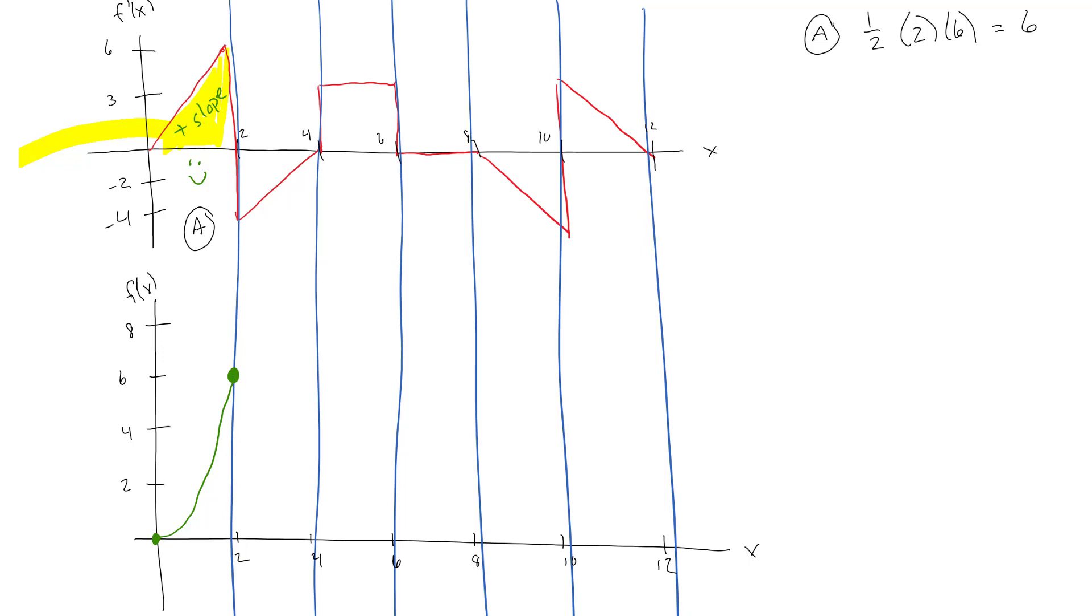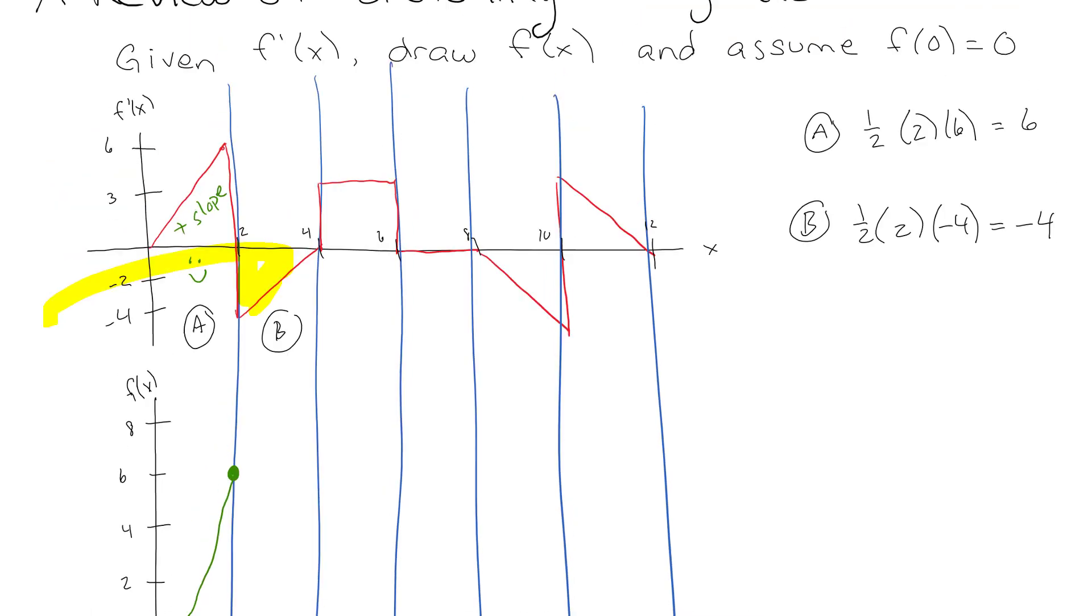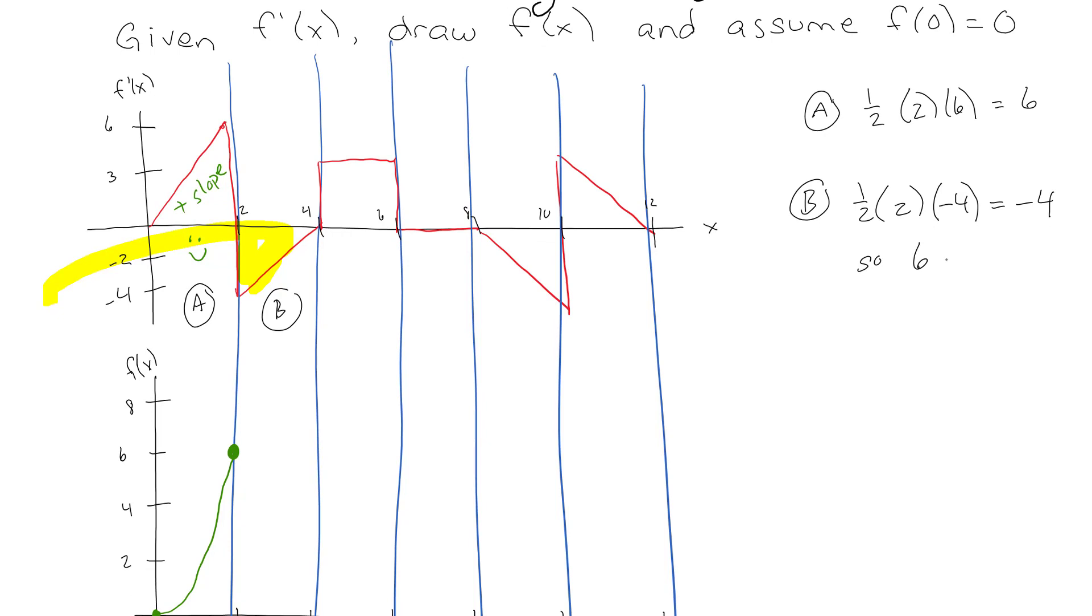Now if we look at section B, this is another triangle. The area of that is one-half base times height is four, but it's a negative area because it's below the x-axis. So we have an area of negative four. That doesn't mean we come down to negative four - we're starting at six, then we're going to lose four, and end up at two. And this is a positive slope, so it's a happy face. We're doing the other side of that happy face.